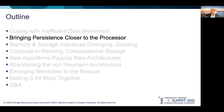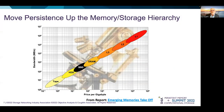One way is to bring storage or persistence closer to the processor. Let's see how this has been evolving over time, and how it is likely to continue to evolve in the future. This slide shows the memory storage hierarchy, running from cheap and slow tape, through hard disk drives and SSDs through dynamic random access main memory, to the various levels of cache memory: L1, L2, and L3.